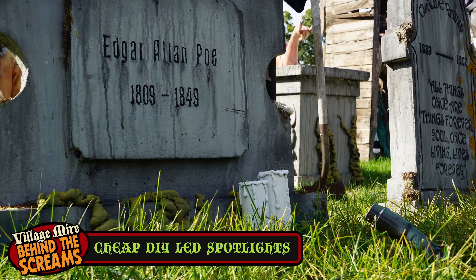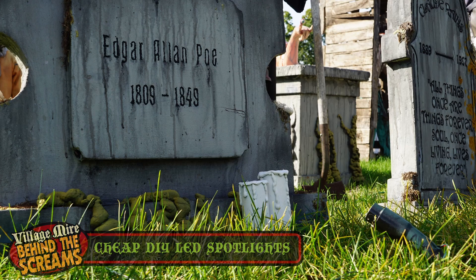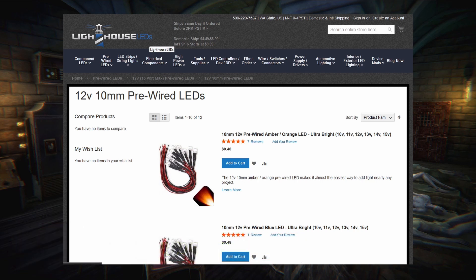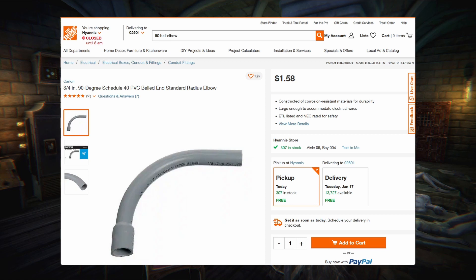These are what I use on every tombstone in my yard haunt cemetery scene. The materials you'll need are 5 or 10 millimeter pre-wired LED light bulbs, a 3 quarter inch 90 degree bell end elbow, schedule 40 conduit, gray type.